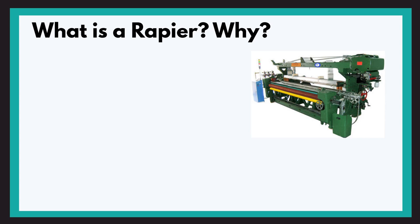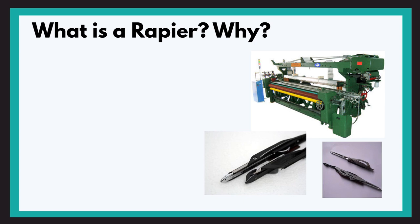So this is how a rapier loom looks like and these are the rapier heads, which are actually concerned with the gripping and the yarn transfer which eventually results in picking.